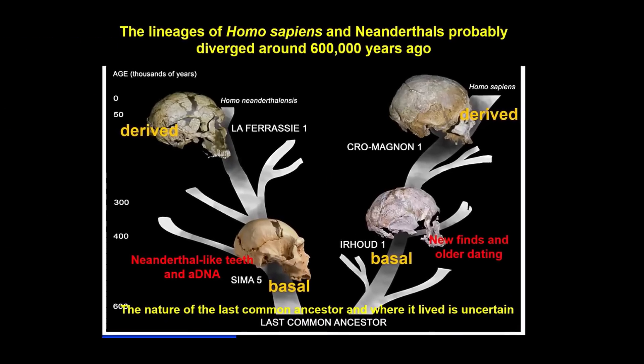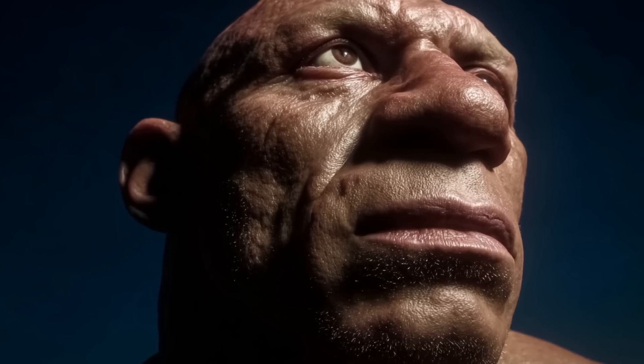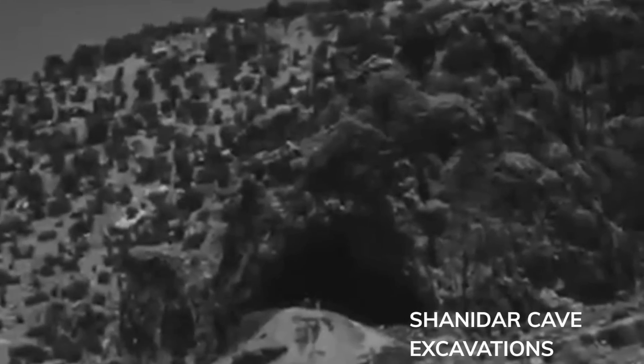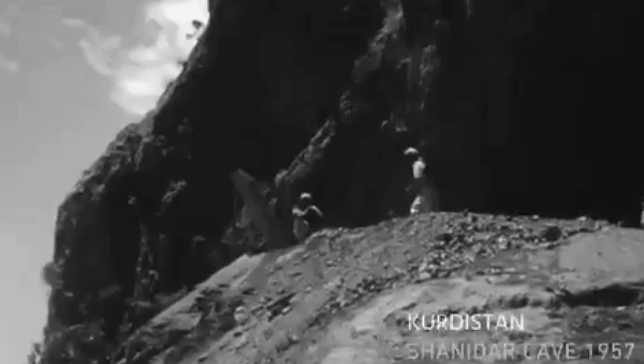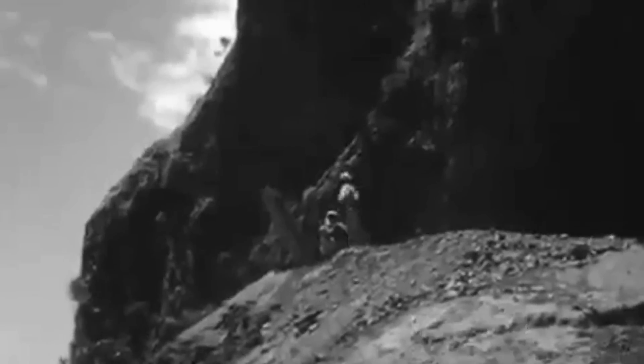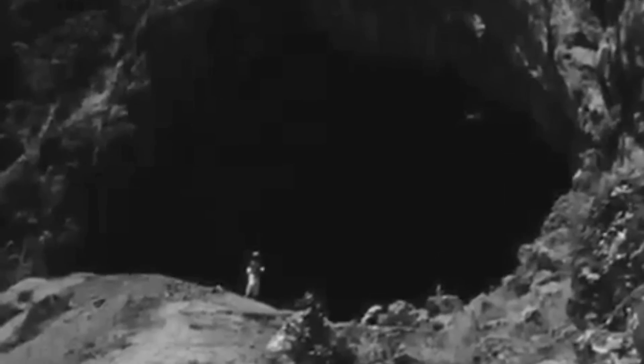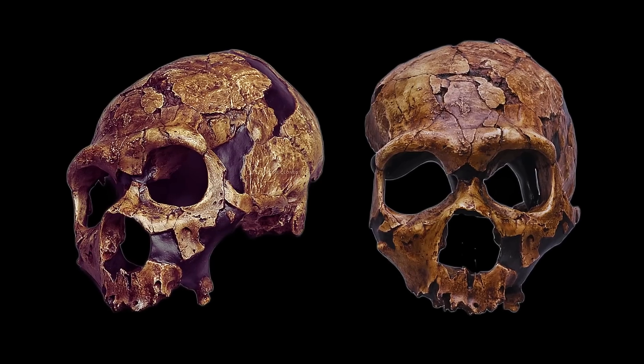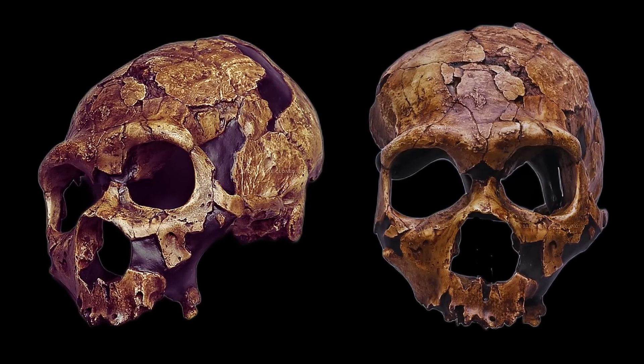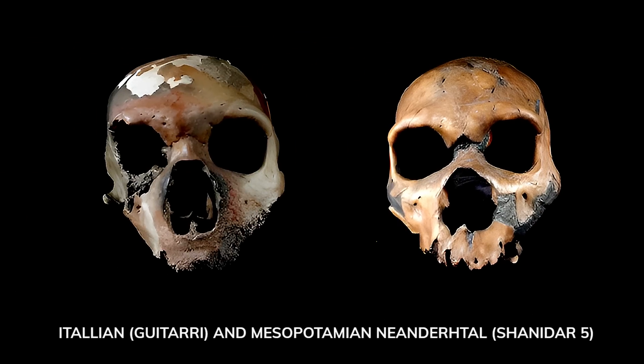A crucial reason Shanidar V draws so much debate is the shape of its frontal and zygomatic bones — the very parts of the face that most clearly differentiate Neanderthals and modern humans. A landmark geometric morphometric study measured 291 points across the frontal and zygomatic regions of dozens of fossils and recent humans. They found that Shanidar V actually falls within the range of modern human variation in these regions, which is striking because most Neanderthals cluster away from modern humans here. Its unusual flat frontal bone was initially suspected to reflect cranial deformation, but later reconstruction showed this is most likely individual or regional variation rather than artificial modification.